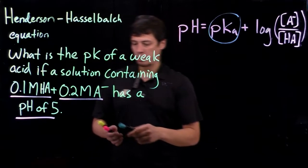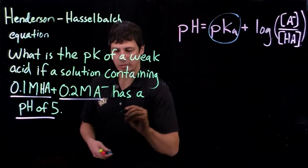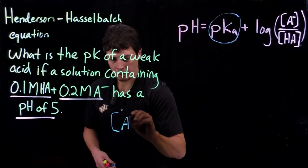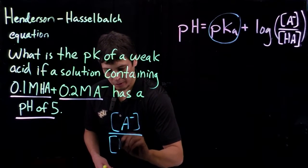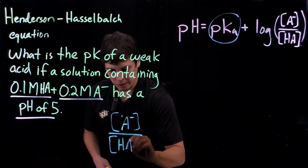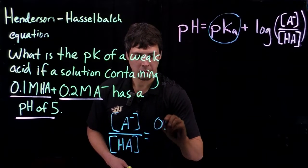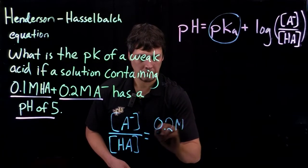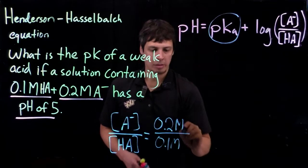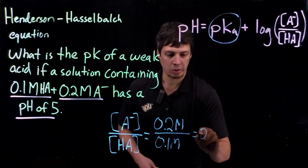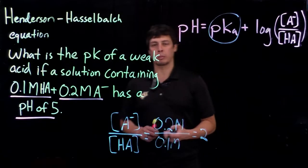So what we're seeing very quickly is that the ratio of conjugate base over the acid equals 0.2 over 0.1 molar. So that's equal to 2, so 2 is not that far of a ratio from 1.